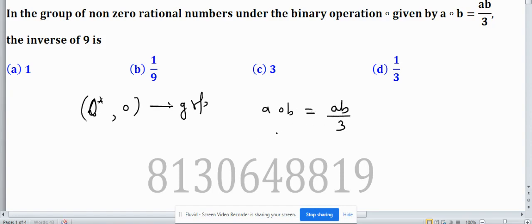So we are seeking what is the identity element. Consider e is the identity element, so it will return a for any a, and a is nonzero. By the property of the operation, ae/3 equals a, and this implies ae/3 minus a is 0.